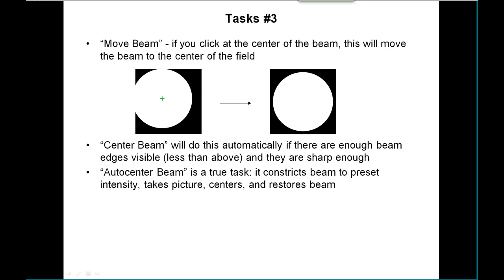Now we have some things that are not really tasks in terms of doing lots of things in a row, but are handy features for moving the beam. One feature is called move beam, where if you click in the middle of where you think the beam is centered and then you activate move beam, it's going to move the beam so as to move that point to the center of the field. In the best case, click here and you end up with the centered beam. Now, center beam will analyze the image and do this automatically, but it requires that you have enough beam edges visible. You don't need as much beam edges here—you can have like just three corners showing and it will be able to handle, or even one corner showing if it's big enough.